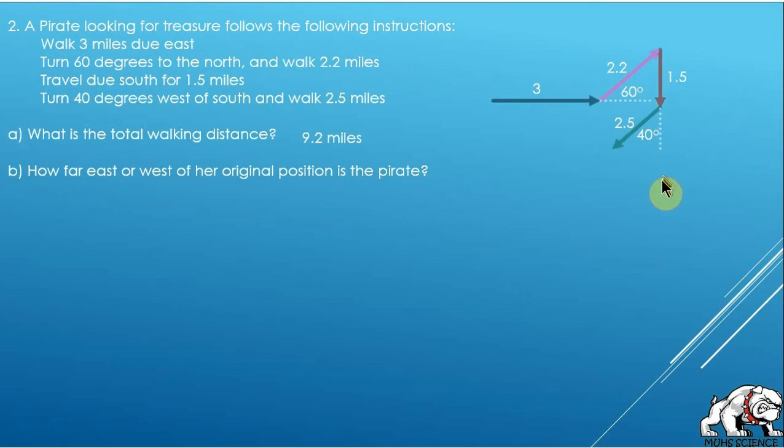So how far east or west? This is where you start setting up a table. I've labeled vectors A, B, C, and D. And now I want to know what is A in the x direction? Well, A in the x direction is simply just three miles.